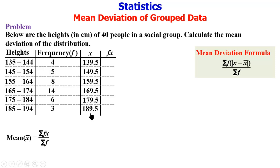Now we go ahead to find fx. fx means the frequency multiplied by x. For your information, this x means the mid value of the class interval. So we multiply 4 times 139.5 gives 558. 5 times 149.5 gives 747.5.